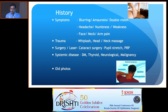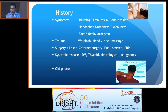Systemic disease — diabetes, thyroid, neurological conditions, any history of malignancy — all these should be asked about. And sometimes you can ask for old photographs, what we call the FAT scan, family album tomogram, and that may give you clues as to whether it is a pre-existing or long-standing condition.